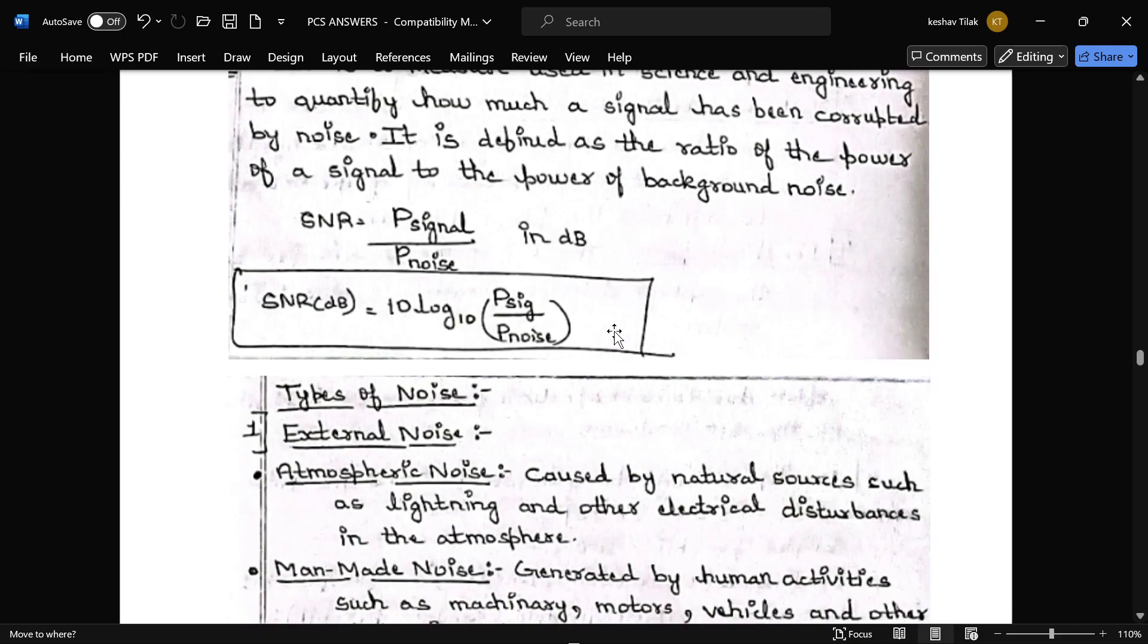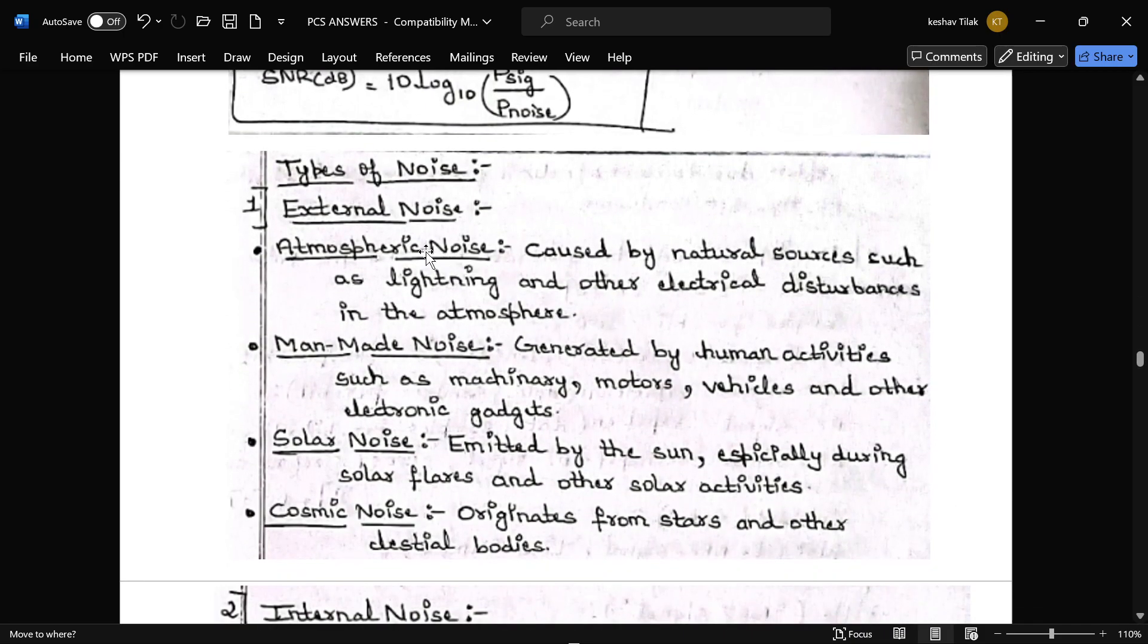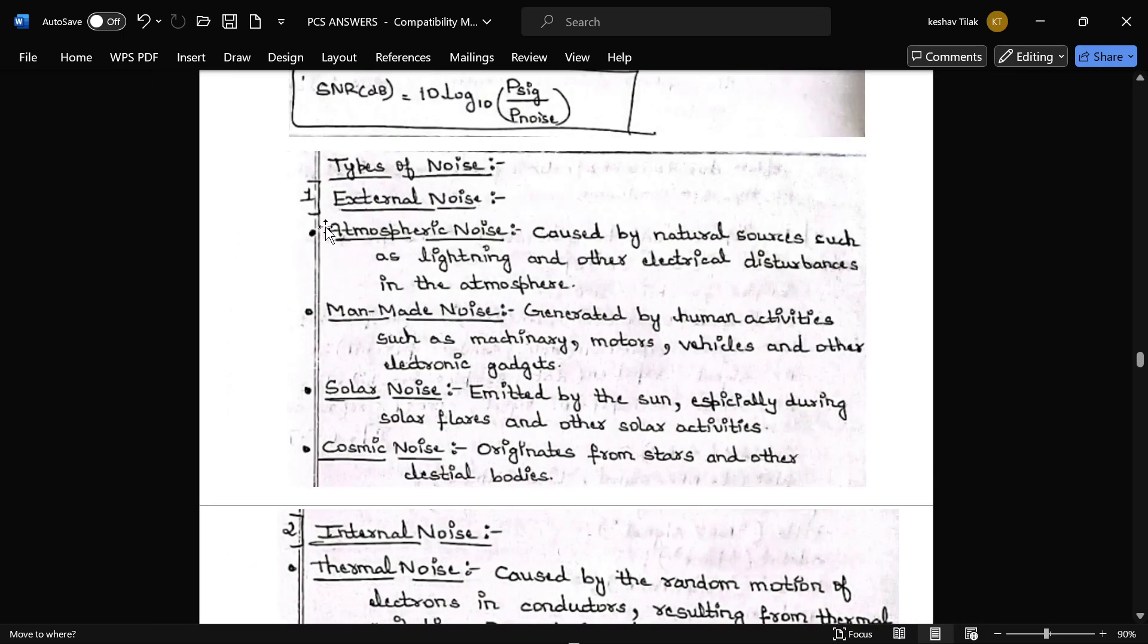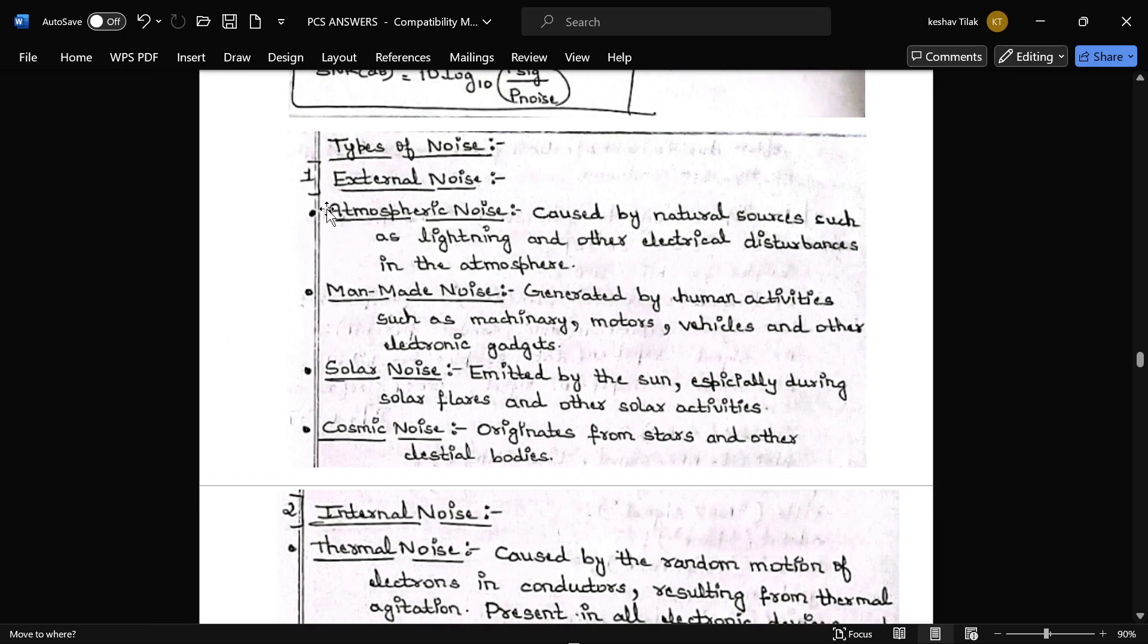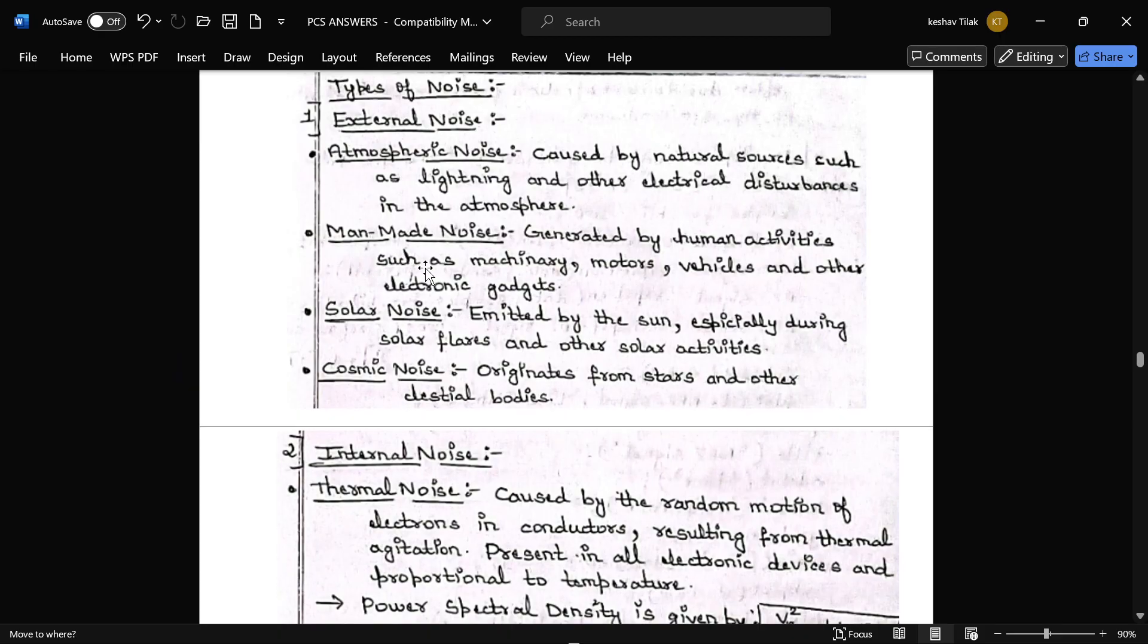And in the noise mainly two types are there. That is external and internal noise. Many types are there. That is atmospheric noise. That is caused by nature.